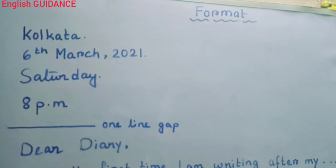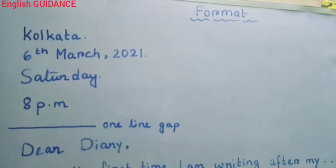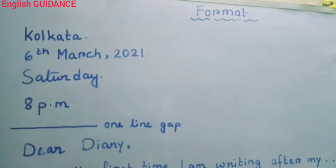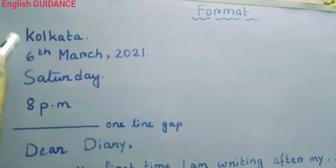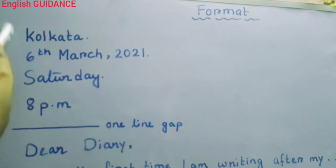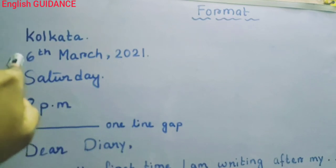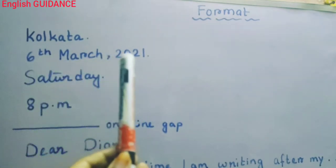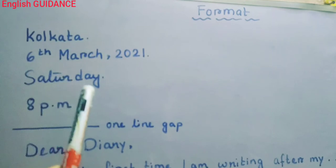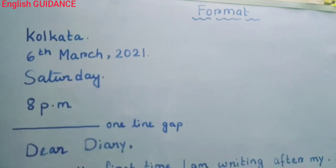Let's get started with the format. First, you have to maintain a straight line. At the top, you will write the place — the way I have written Kolkata. After that, you have to write the date. Just see how I have written the date — in this way, you have to write: 6th March 2021. Then you have to write the day, then the time.